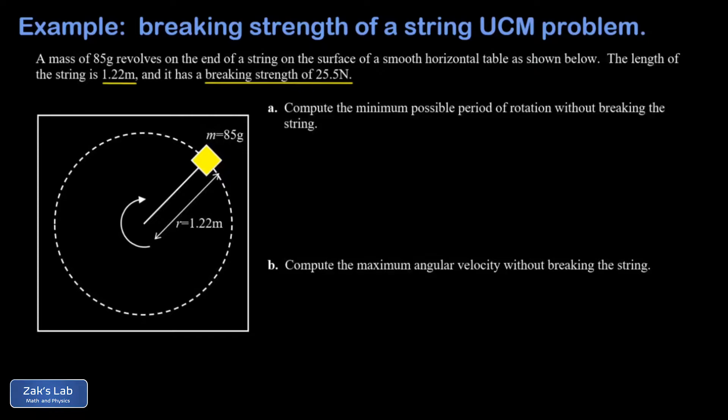In other words, how fast can this thing revolve before the string breaks? Basically what we're looking for is what's the period that corresponds to a tension of 25.5 Newtons. We look at a quick force analysis. The force exerted by the string is inward toward the center of curvature and that's what's supplying our centripetal force here. I'm going to call that Ft.